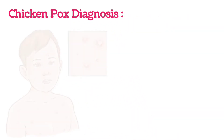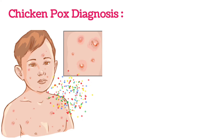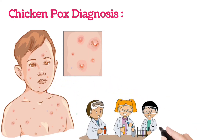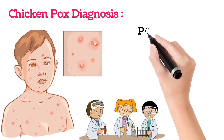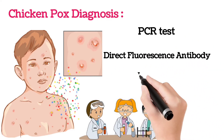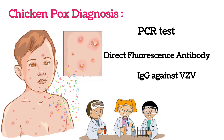Coming to the diagnosis of chickenpox, it can be diagnosed by clinical diagnosis — that is, the appearance of vesicles or eruptions. The most important feature is that these eruptions are found at different stages of healing. Other diagnostic tests include PCR for viral DNA, direct fluorescence antibodies, and IgG anti-varicella zoster virus, etc.